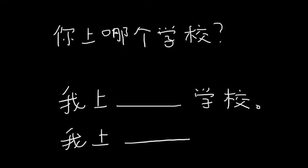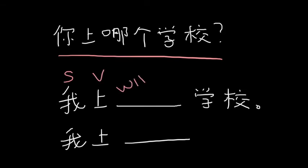To answer it, the question is 'ni shang nage xue xiao.' You switch the subject to 'wo,' so there's your subject. 'Wo shang nage xue xiao' — and then you put in whatever school you want it to be. So it becomes 'wo shang blank xue xiao.' For you guys, 'wo shang Roland Hall xue xiao.'